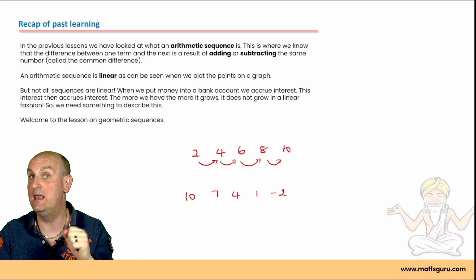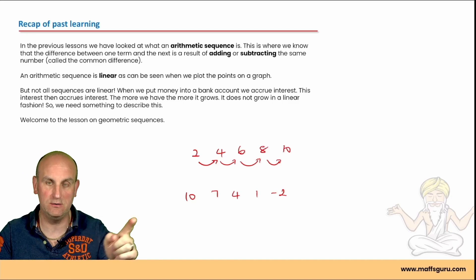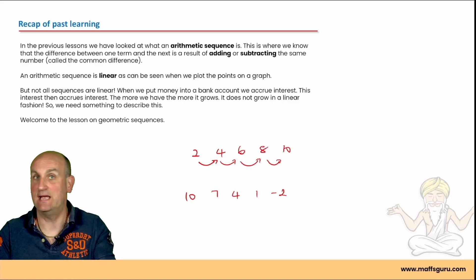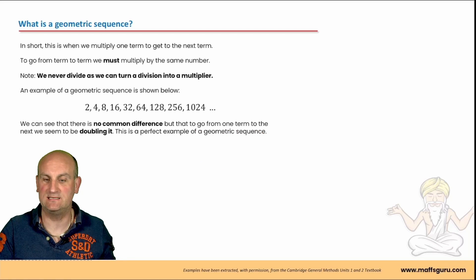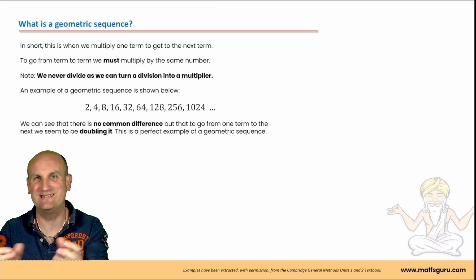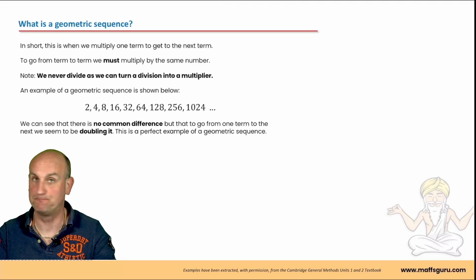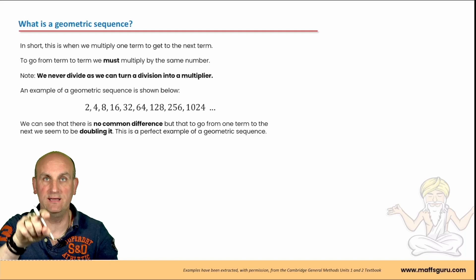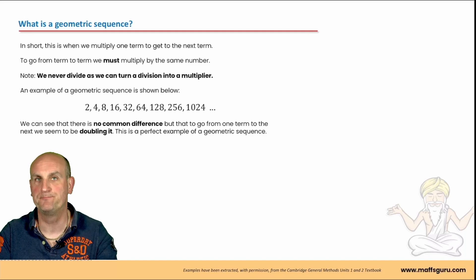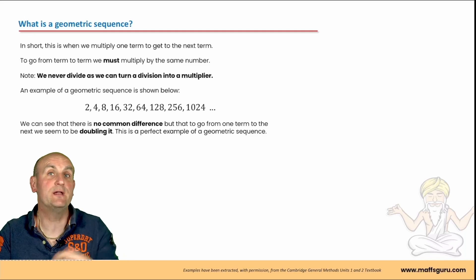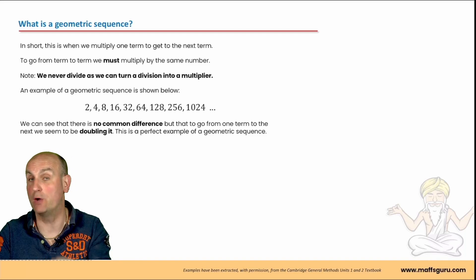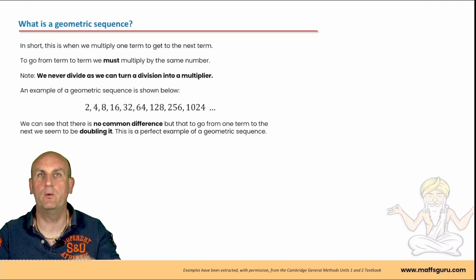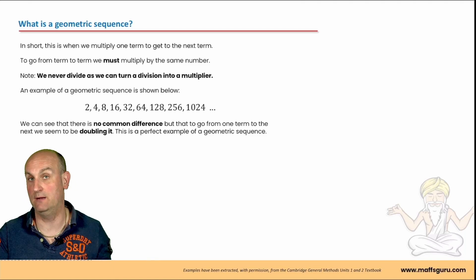Arithmetic sequences are linear — if we drew them on a graph we'd see a beautiful straight line. Having done adding and taking away between terms, it makes sense that we're now going to deal with geometric sequences. A geometric sequence is one where you multiply to get from one term to the next. You'll notice I don't say divide — in our head we might think 'divide by two', but we're going to turn that into something else in a moment.